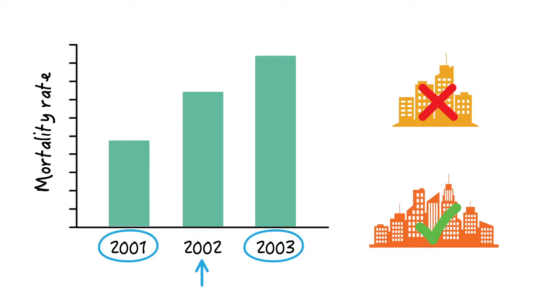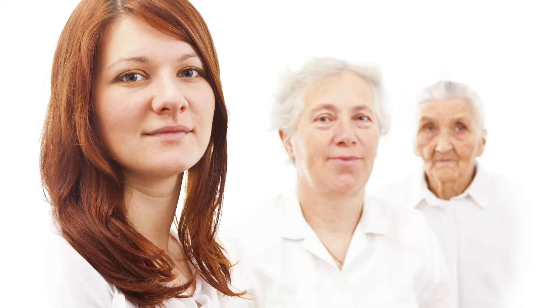One problem with comparing crude mortality rates between time periods, communities, or whatever groups you're comparing is that these groups usually have a different age distribution, and age is the strongest predictor of death.